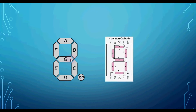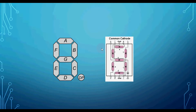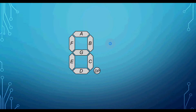The internal connections among the segments inside the unit are like this. Here, the cathodes of all the segments are connected together, making a common cathode for the whole unit — so it is called a common cathode 7-segment display. In the case of a common anode display, all the anodes are connected together.